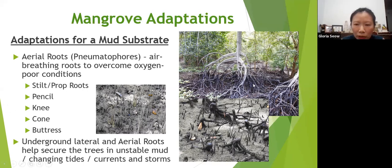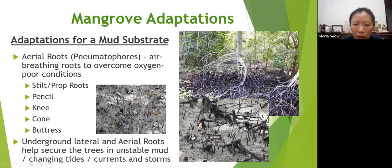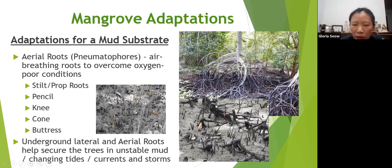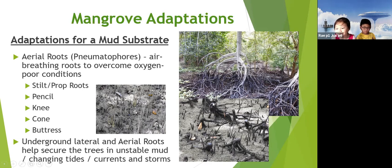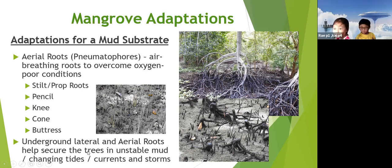There are a few kinds of roots. Prop roots are above the ground and help to support the tree in unstable mud as well as breathe air directly. Pencil roots look like thin little pencils sticking up — the lateral roots underground send up these pencil roots like a snorkel to breathe air directly. Knee roots look like bare kneecaps. There are also cone roots and buttress roots.